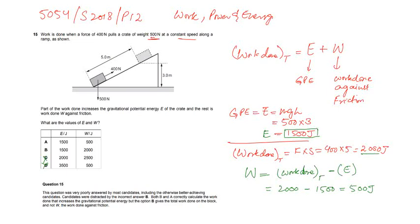5054, June 2018, Paper 1, Variant 2. Topic work, power, energy, and question number is 15.